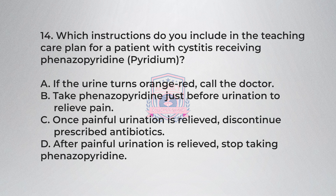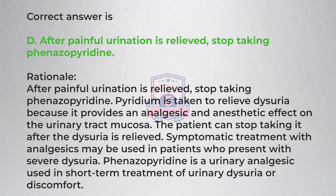Question 14: A patient with cystitis is receiving phenazopyridine. Which instruction should the nurse provide? A) If the urine turns orange-red, call the doctor, B) Take phenazopyridine just before urination to relieve pain, C) Once painful urination is relieved, discontinue the prescribed antibiotics, D) After painful urination is relieved, stop taking phenazopyridine. Correct answer is D.